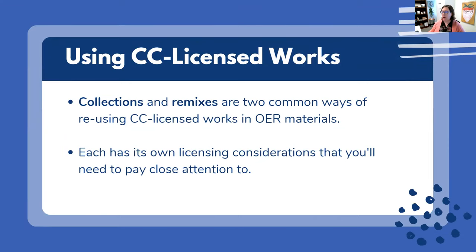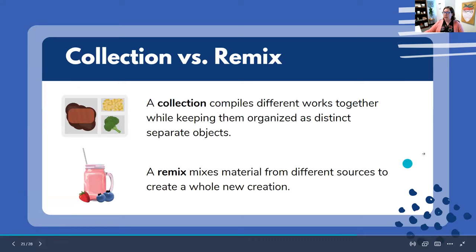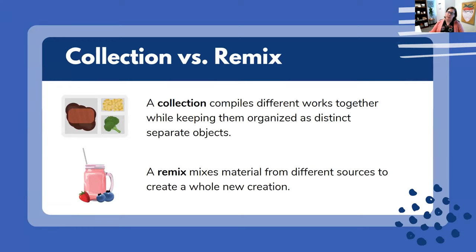Now that we understand the different licenses, let's talk about how to actually use works that have a CC license. The two main ways people use them are called collections or remixes, and each has its own licensing considerations. They use the analogy of a TV dinner versus a smoothie. A collection is when you compile different works together but keep them as distinct, separate objects without changing anything about them. A remix is when you actually mix material together from different sources to make something totally new.